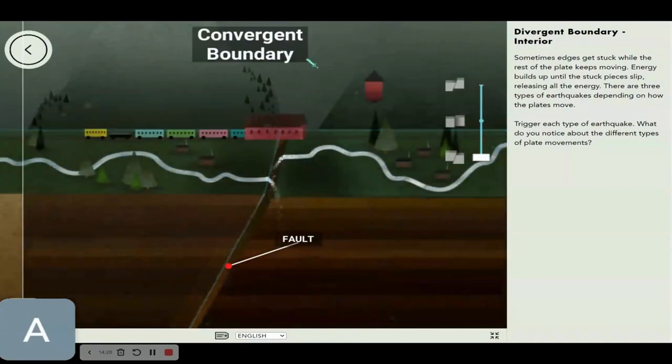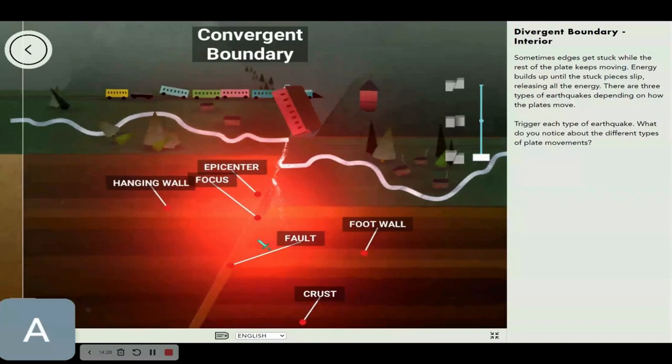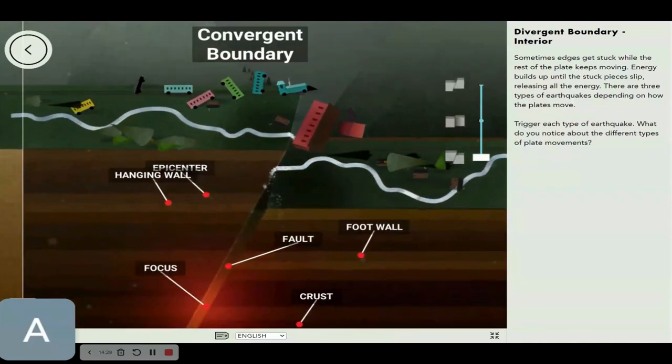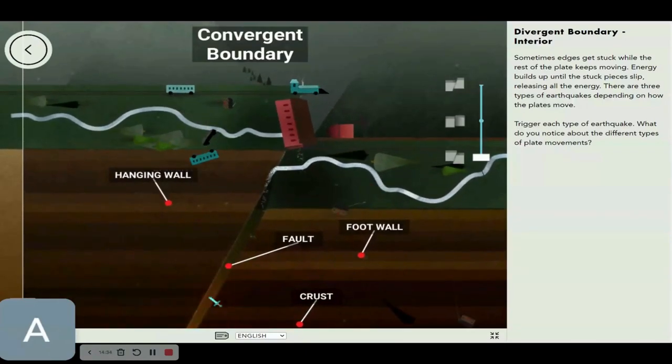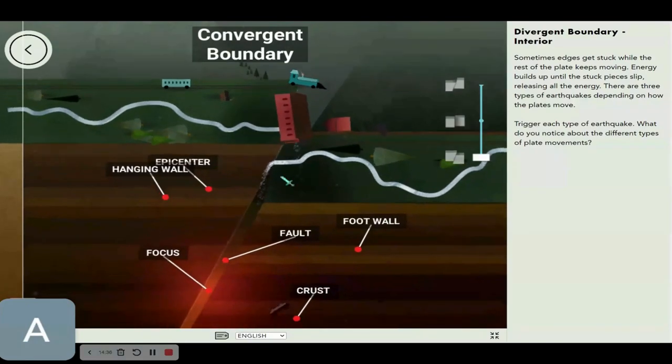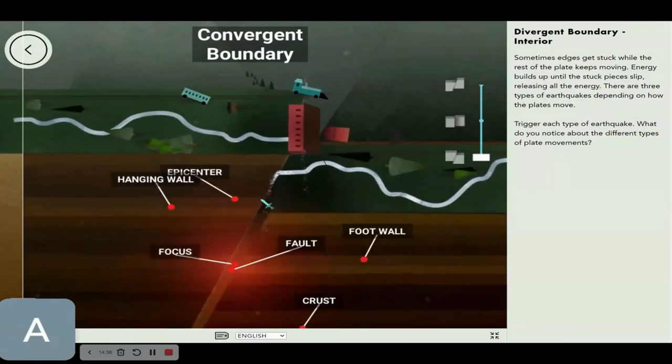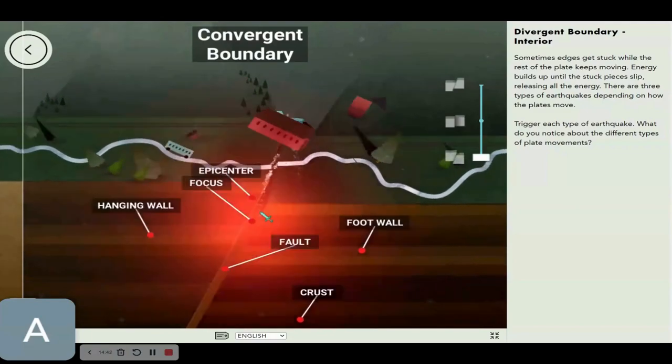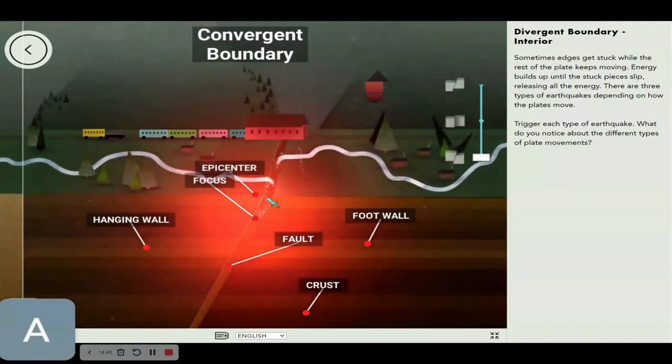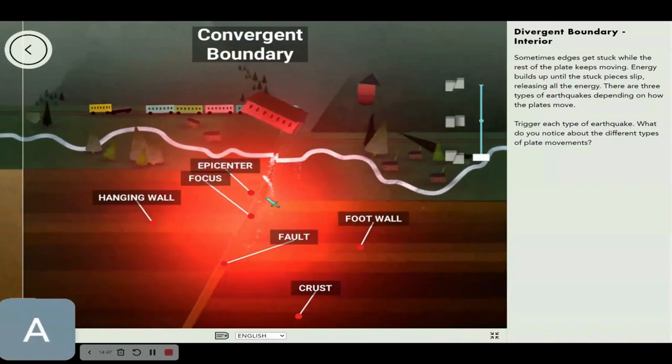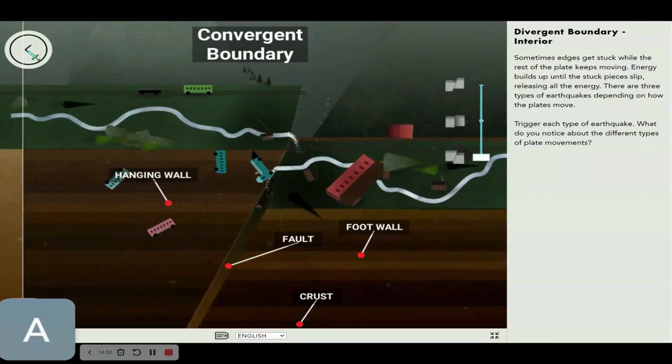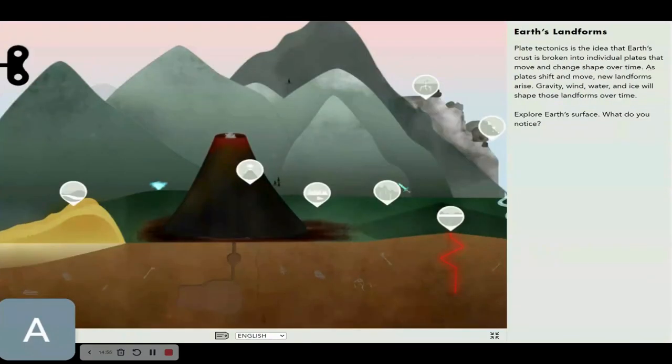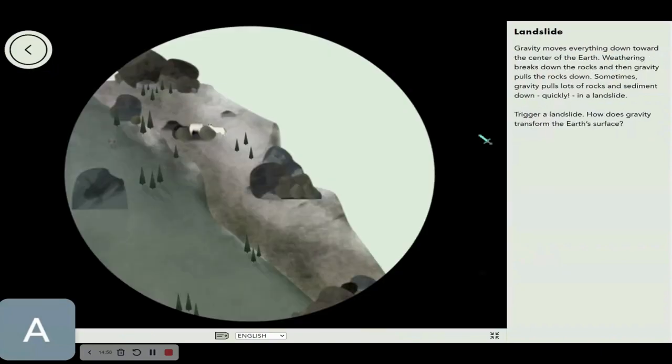Now let's check this out, a convergent boundary. Let's generate an earthquake. So this is what a convergent boundary looks like. Basically, they slam into each other.